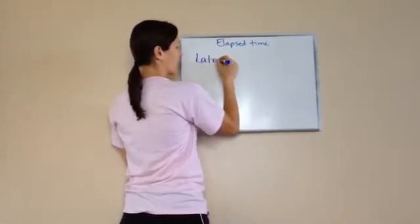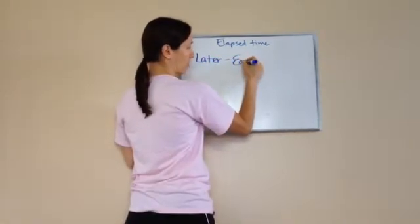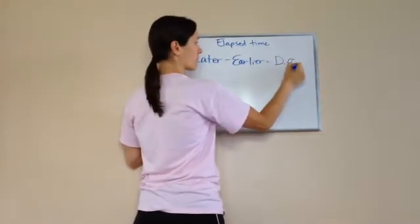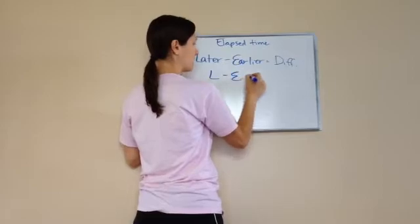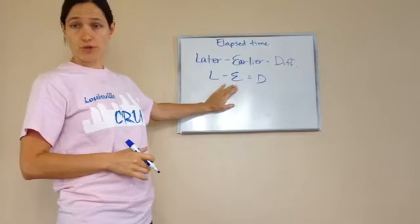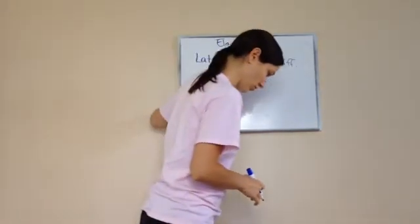Later minus earlier equals the difference. So, L minus E equals D. Whenever you're working with time, this is the pattern you're going to use, Isaac. This is the equation you're going to use.